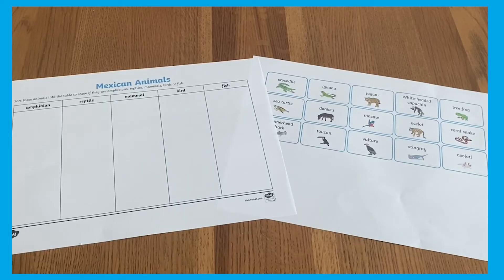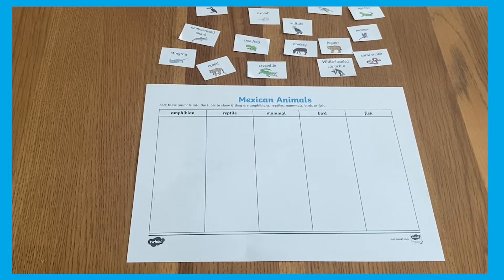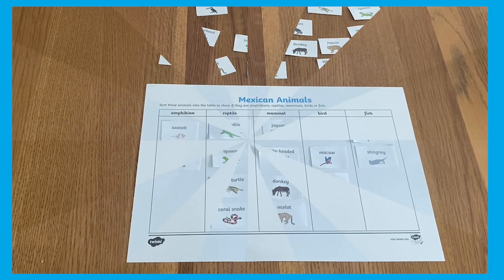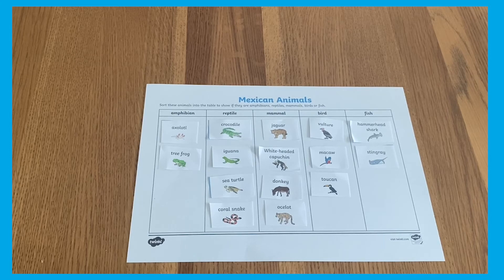For this Mexican animal sorting activity, ask learners to cut out the animals and place them in the correct part of the table for whether they are an amphibian, reptile, mammal, bird, or fish. Make sure that learners know the meaning of these words before starting.